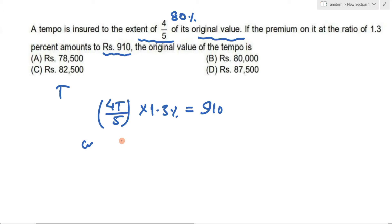So simply, what will you write here? 4T/5 into 1.3 divided by 100 is equal to what? 910.